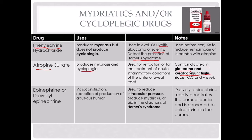Epinephrine or dipivaloepinephrine, like phenylephrine, causes vasoconstriction and reduces production of the aqueous humor, so it's used to reduce intraocular pressure and is going to be used for glaucoma. It produces mydriasis or aids in the diagnosis of Horner's syndrome, so this can also be used for that. Dipivaloepinephrine will penetrate the corneal barrier and is converted to epinephrine in the cornea.